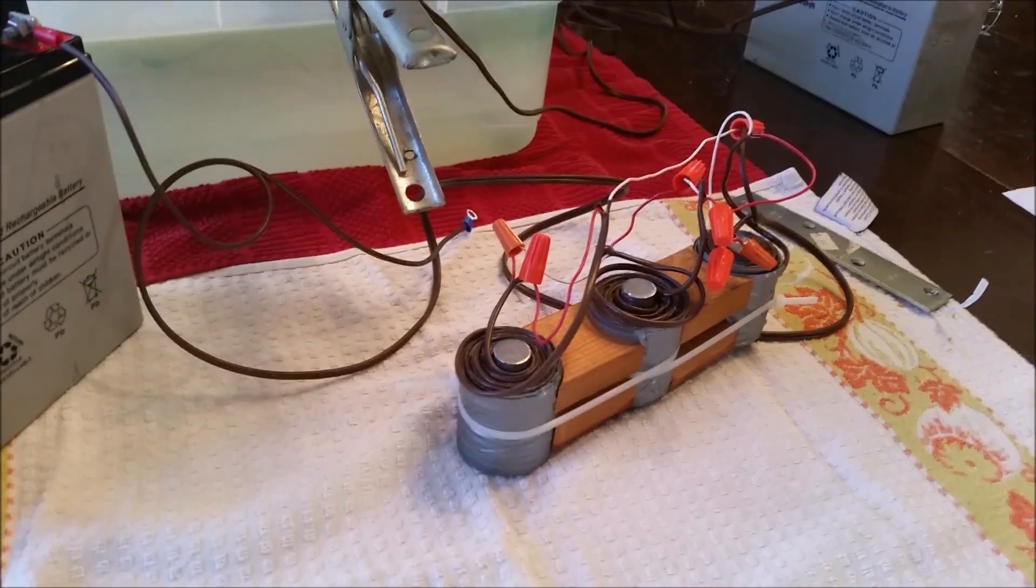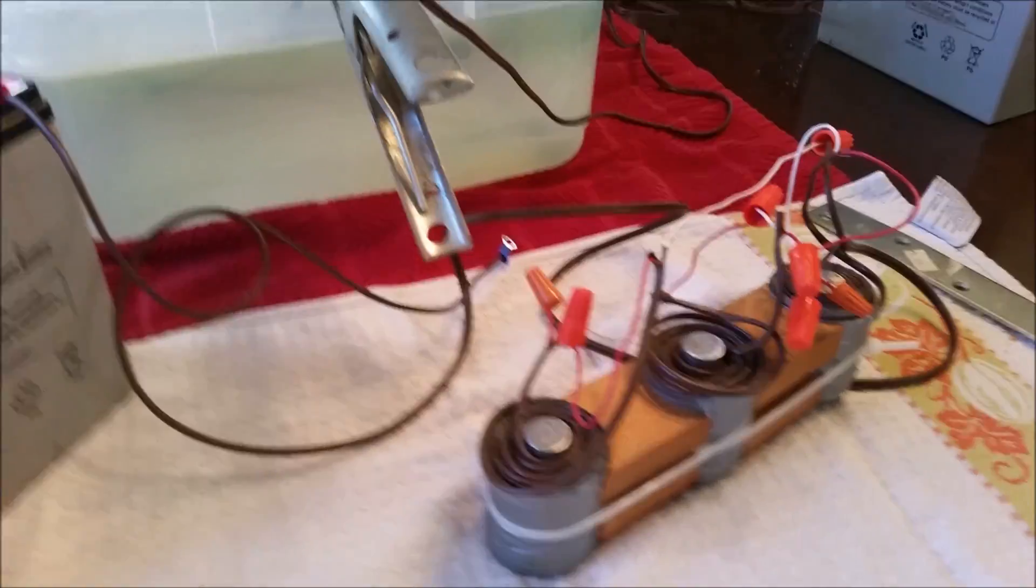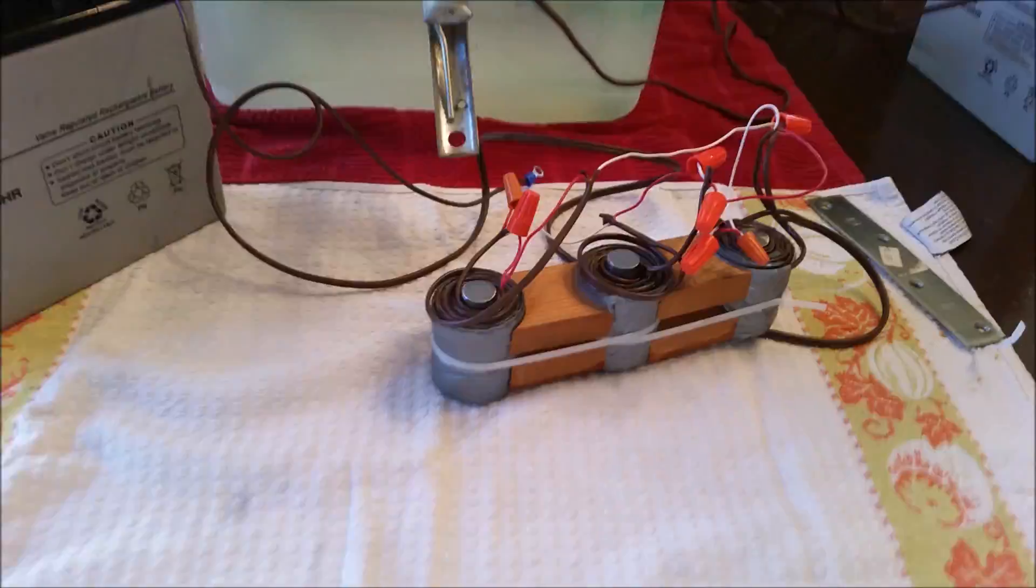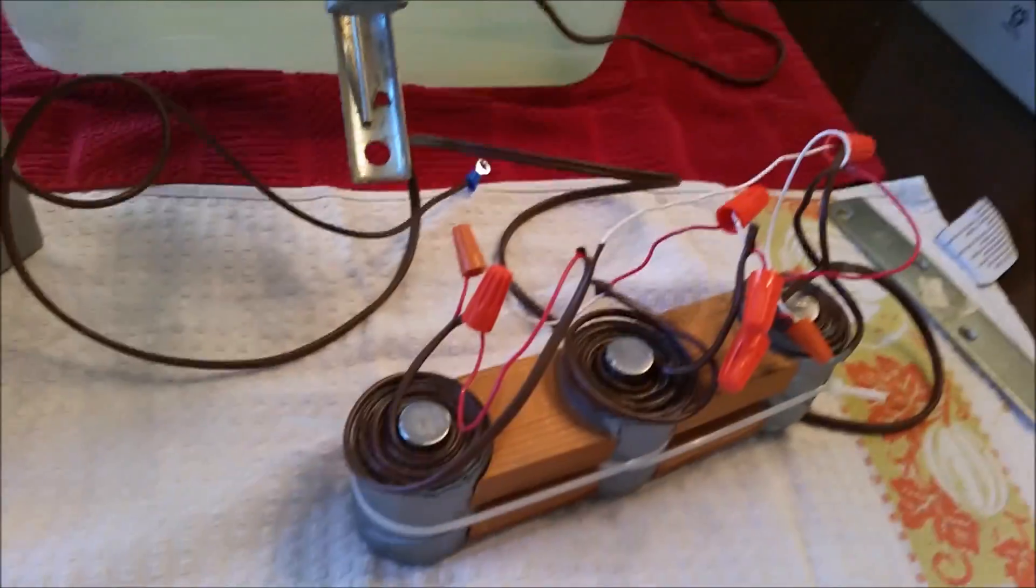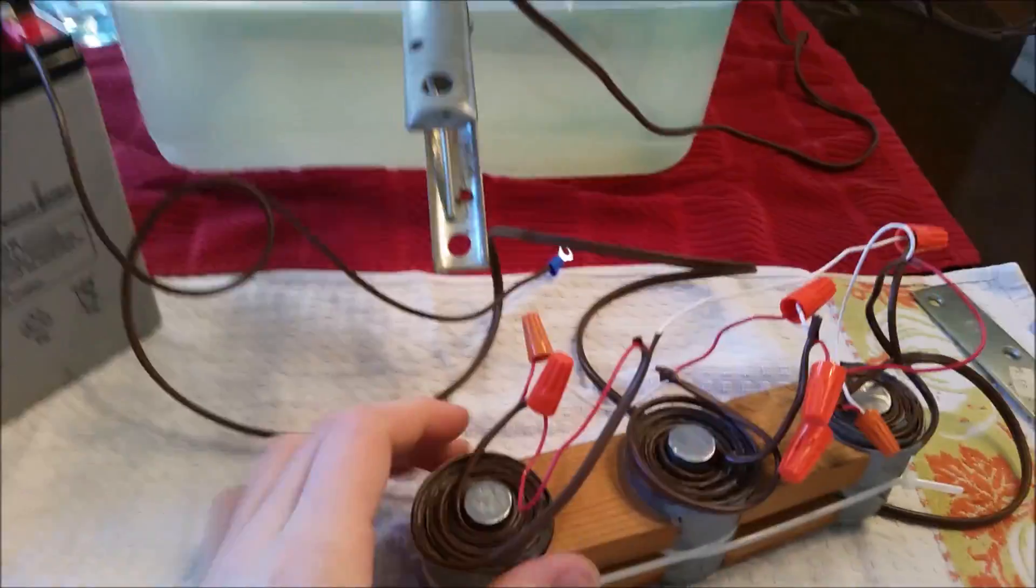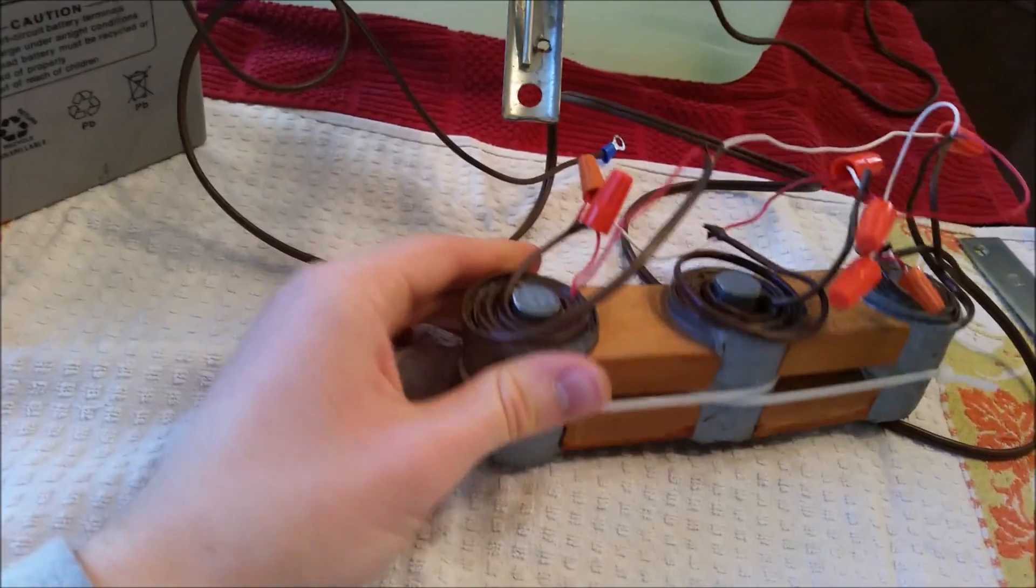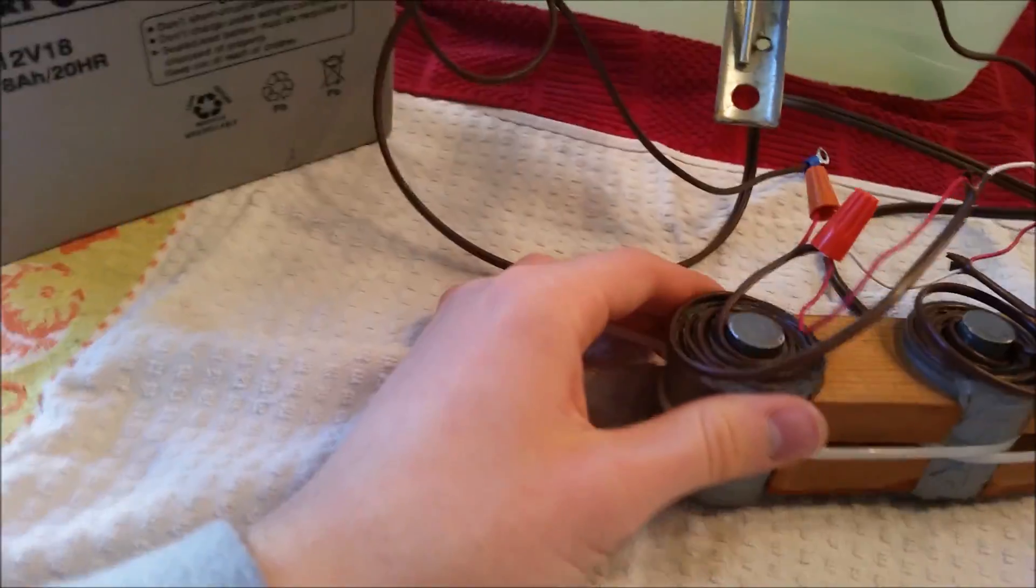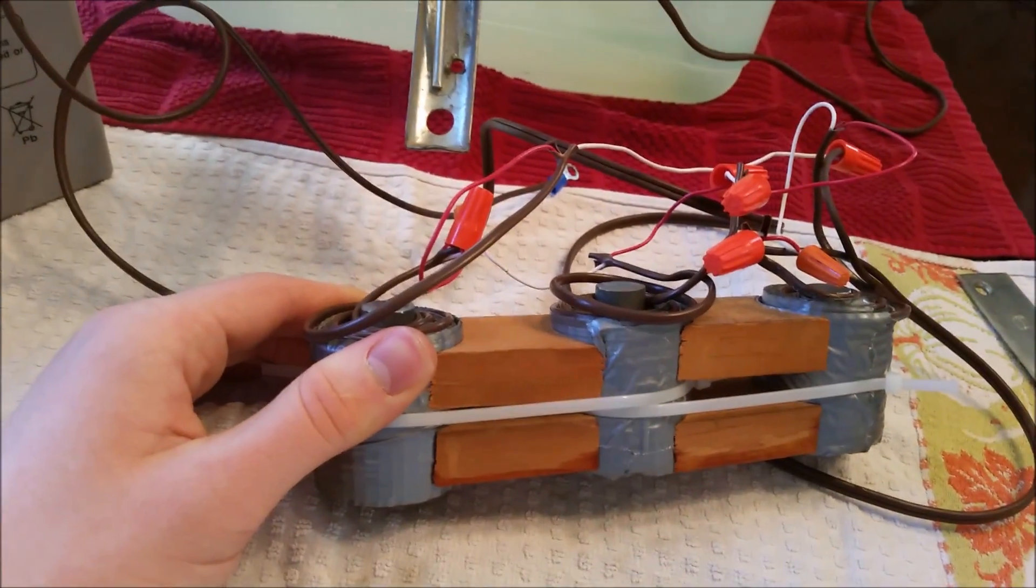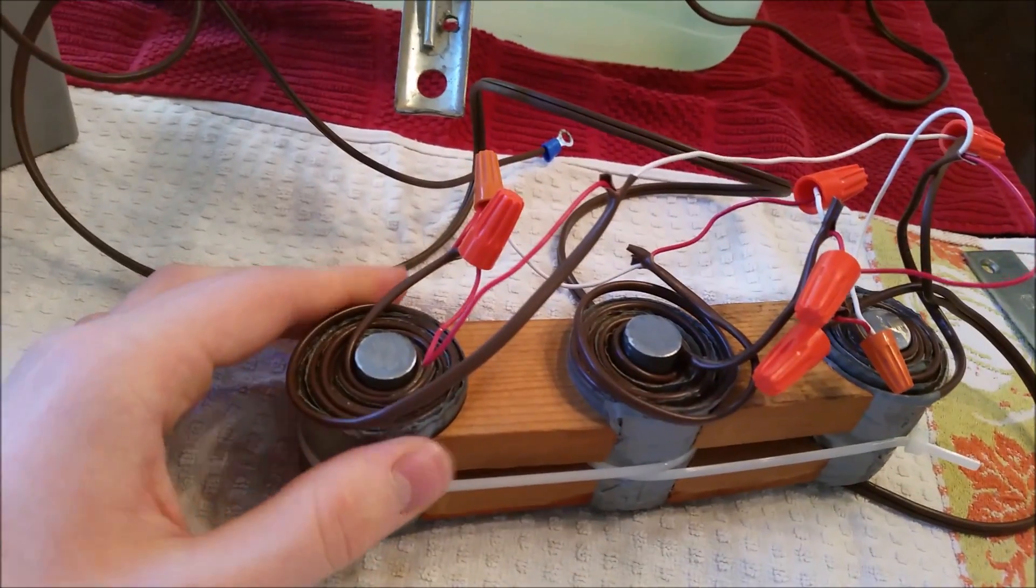I'm going to go over some tips on how to maybe make this better and improvements we're going to try in our next version. First of all, you want to make sure that your electromagnets are powerful enough but don't get too hot. The main thing is you want to make sure that the resistance of your coils is great enough so that when you apply a certain voltage, the current running through them is not too big to burn up the wire.